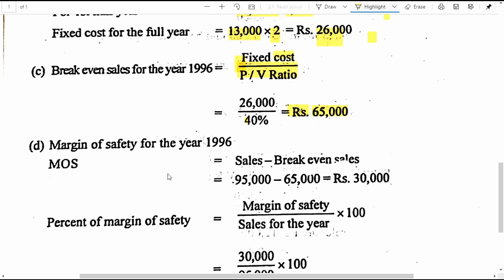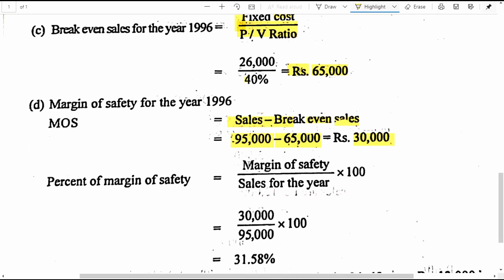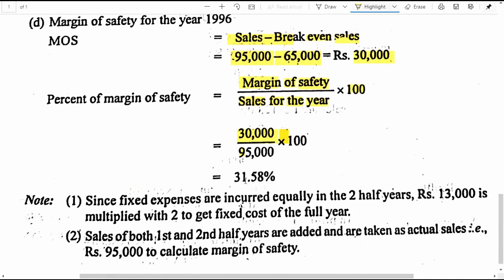The next one is margin of safety. The formula is sales minus break-even sales. Sales for the whole year is 95,000 and break-even sales is 65,000, so the margin of safety is 30,000 rupees. To calculate the percentage of margin of safety on sales: margin of safety divided by total sales into 100 — 30,000 divided by 95,000 into 100 gives us 31.58% as the margin of safety as a percentage on sales.